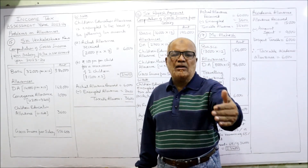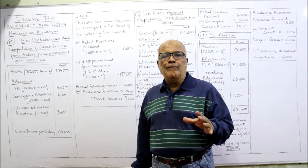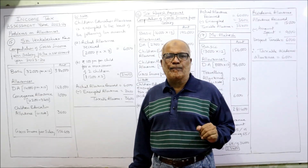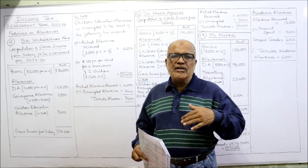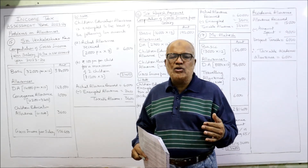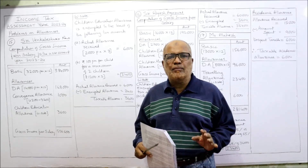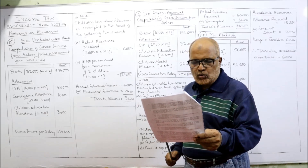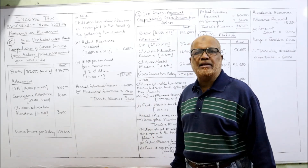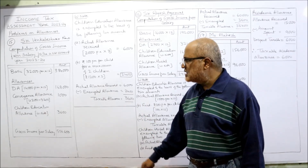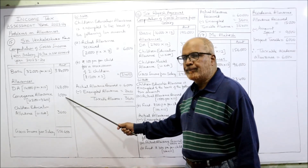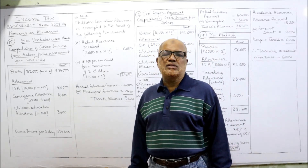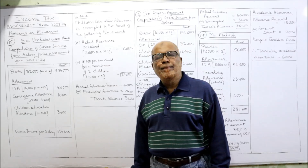When the employer pays conveyance allowance to the employee, it is assumed it is for official duties. The amount spent on official duties should not be considered — only the unspent amount is taxable. Here, out of 4,200, only 3,200 is spent, so the remaining 1,000 is taxable.